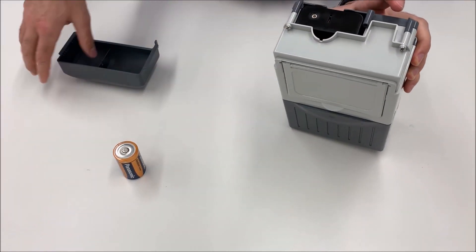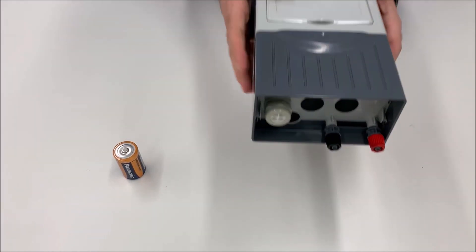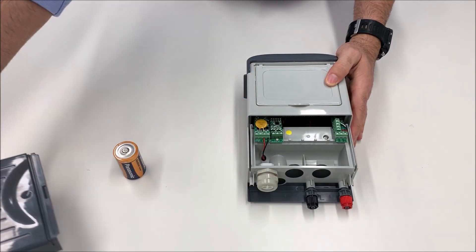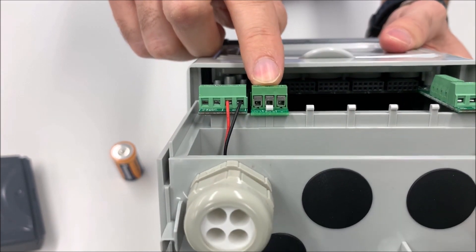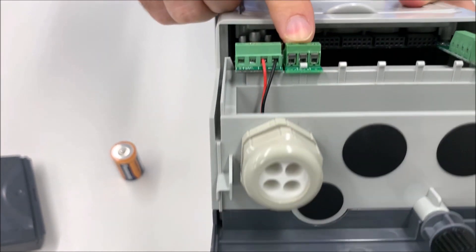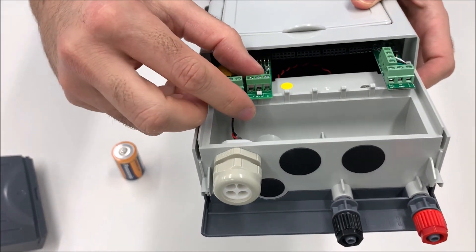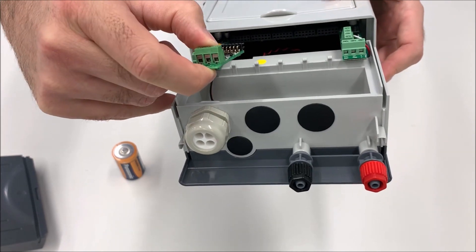I will leave it like that because I will explain you now the second cover. On the second cover, this one, we will find the extension module. This is the extension module. To extract the extension module is very easy. It's only pull, push up, and pull it again.